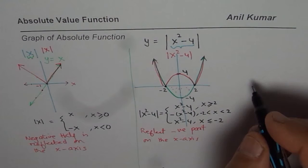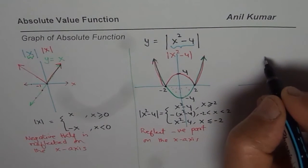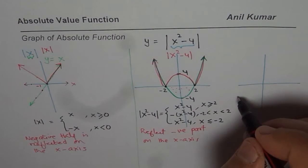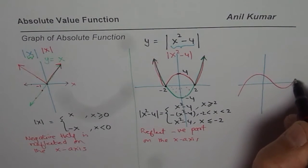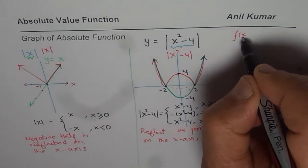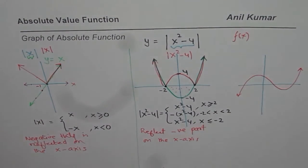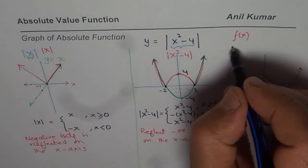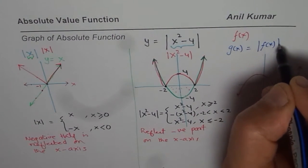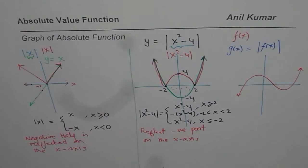Now the third example is for you to do. I'm not writing an equation but drawing a graph. We have a graph here — that is our function f(x). What you need to do is sketch the graph for g(x) = |f(x)|. Show your method. You can pause the video, answer this question, and then look at my suggestion.